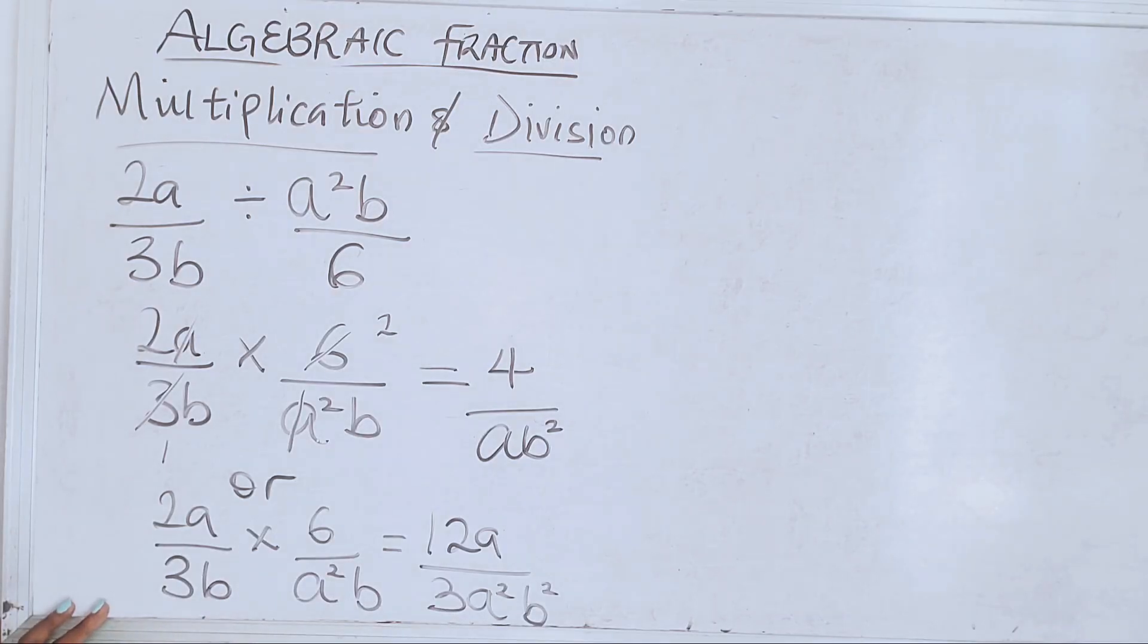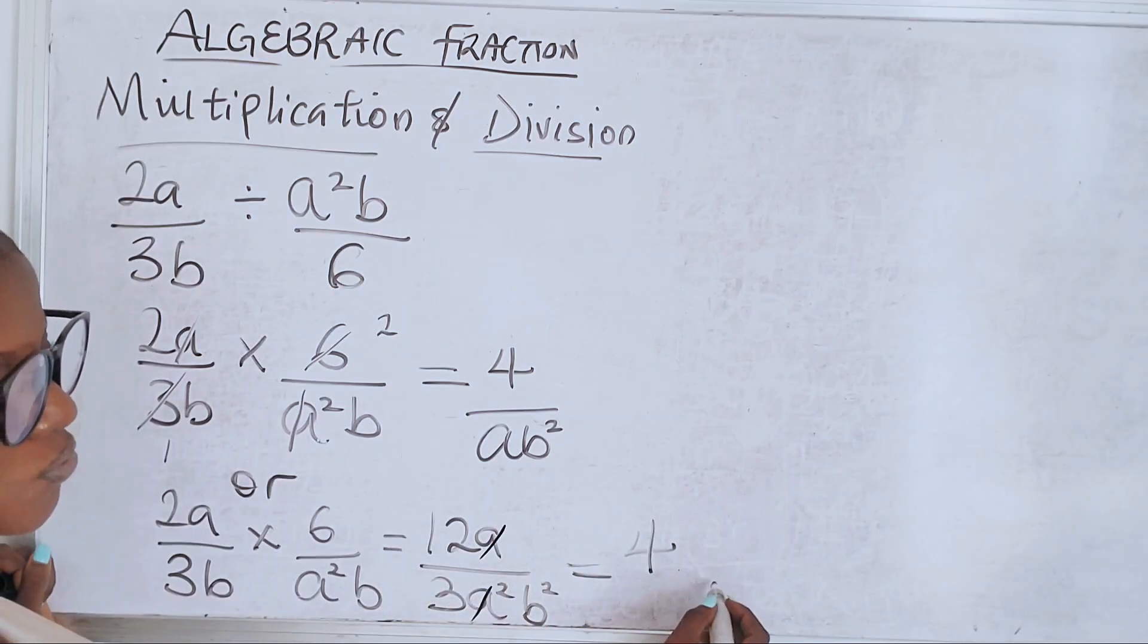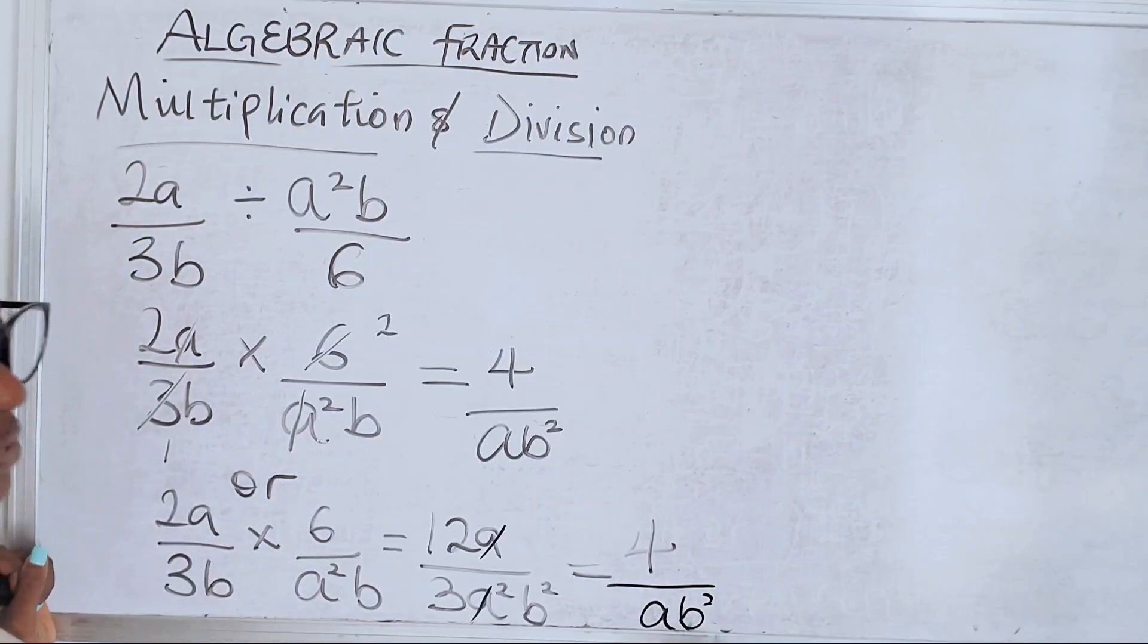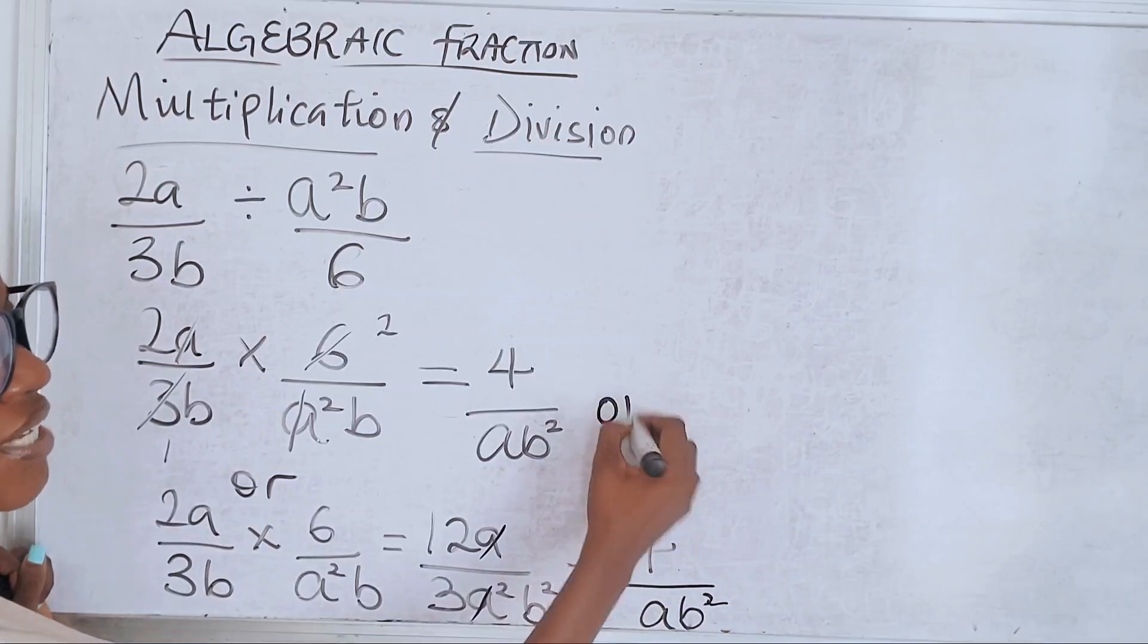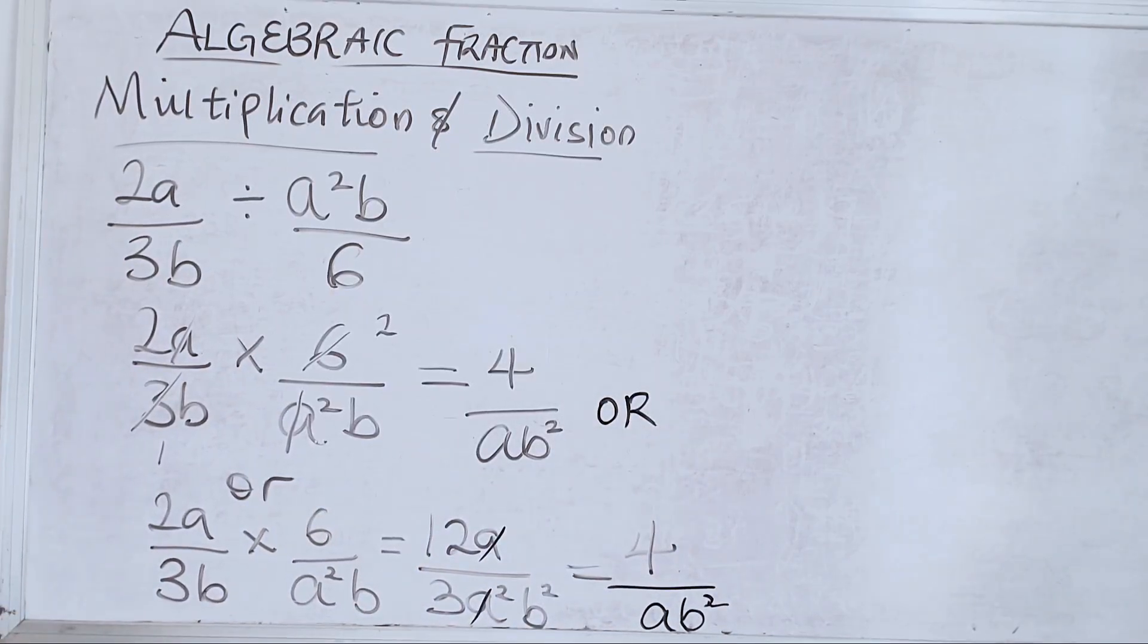Now in this case you can divide after putting it to become one fraction. So you have 3 in 12 is 4, 'a' goes in, so you're left with one 'a' here, and b² simplifies. Do you see the difference? You can decide to do it this way or that way - whichever one works for you is fine. Just make sure you're doing the right thing and you'll definitely arrive at the same answer.